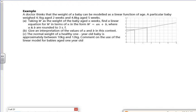So there's an example here in context. It's quite a big example. But then we've got consolidation after it. So I'm going to try and make sure I get this done. So it says the doctor thinks that the weight of the baby can be modelled as a linear function. A particular baby weighed 4.1 kilos at 2 weeks and 4.8 at 5 weeks. Taking W as the weight of the baby, try and find it. Right. OK.